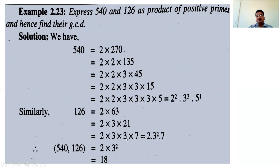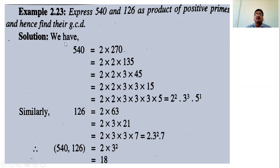Factorize 126: 126 = 2 times 63 = 2 times 3 times 21 = 2 times 3 times 3 times 7. The common prime factors are 2 and 3 times 3 (that is, 3 squared). So GCD(540, 126) = 2 times 3 times 3 = 18. This factorization method is simpler but only practical for small numbers.